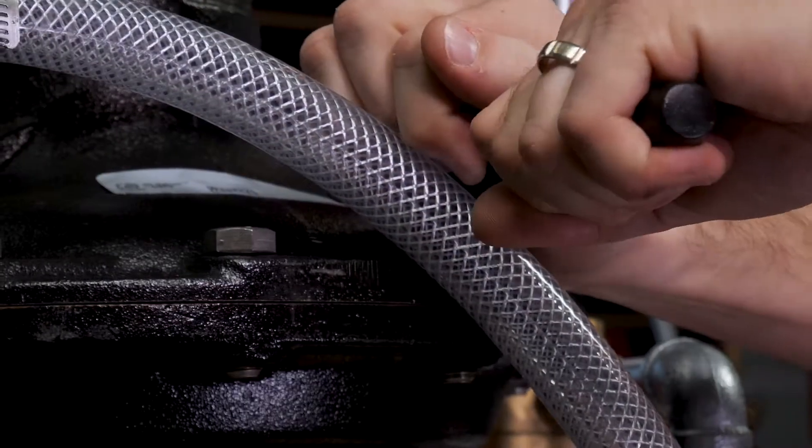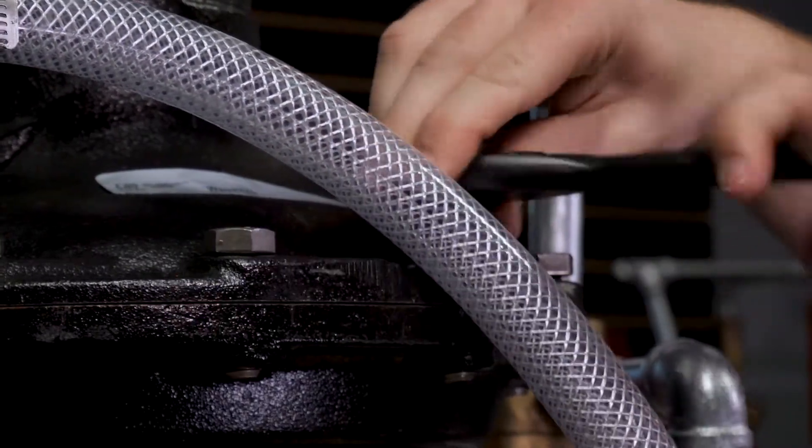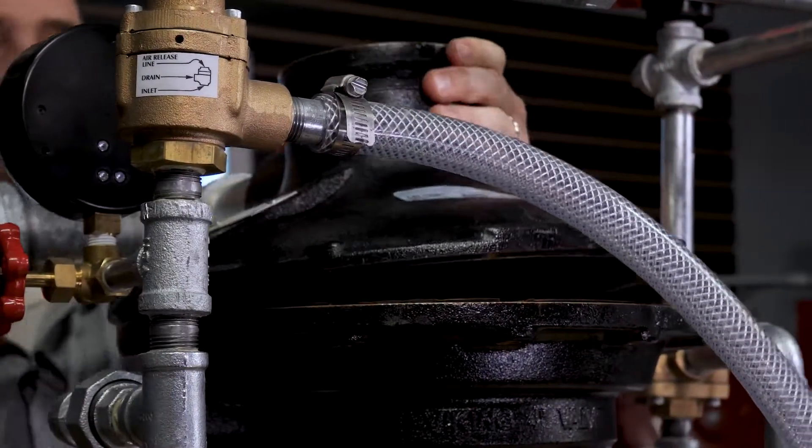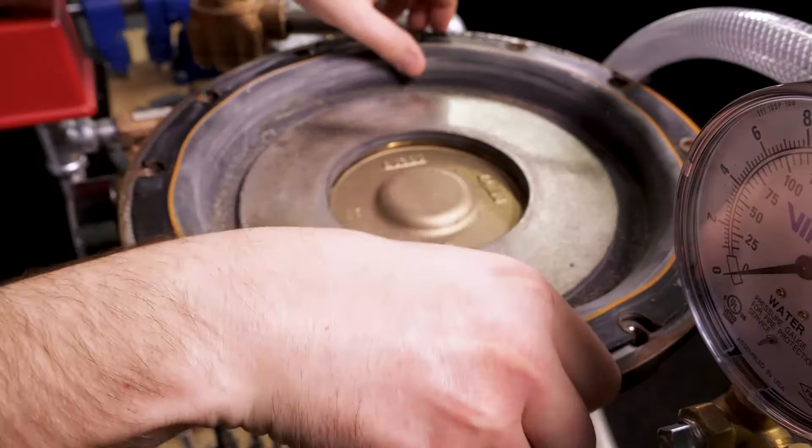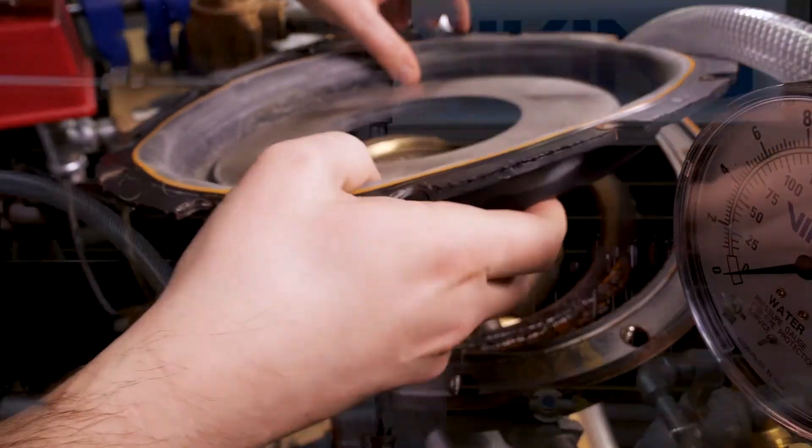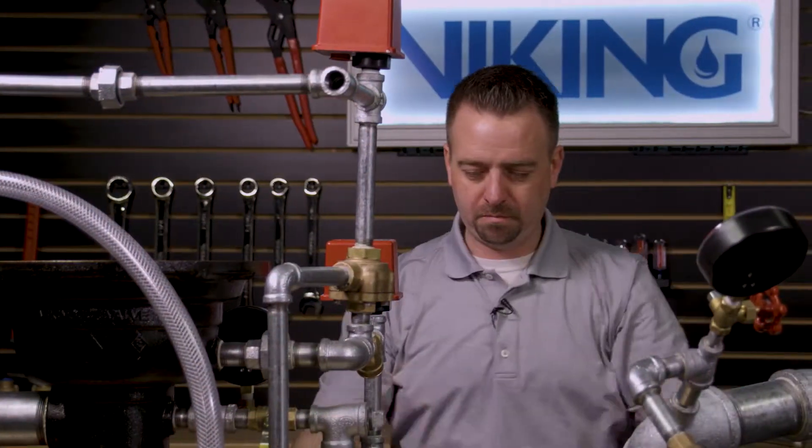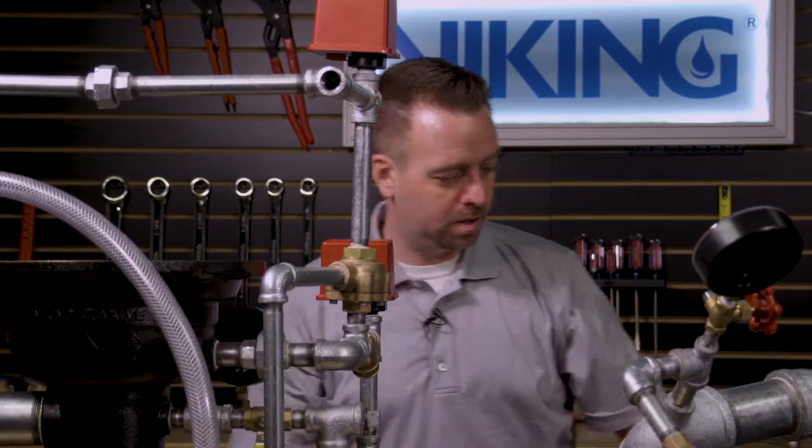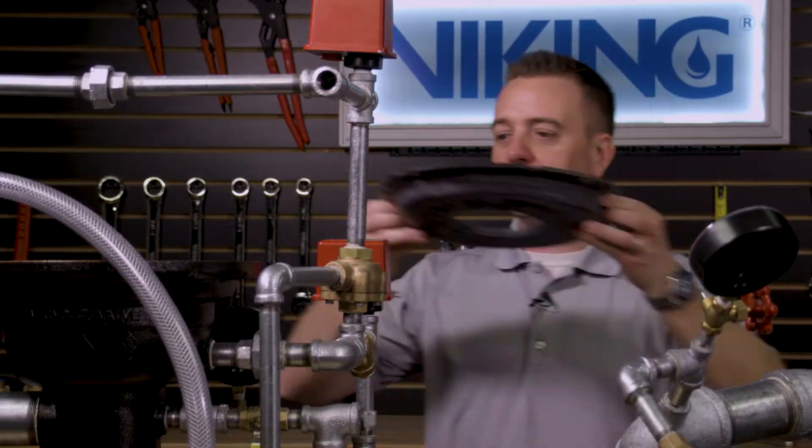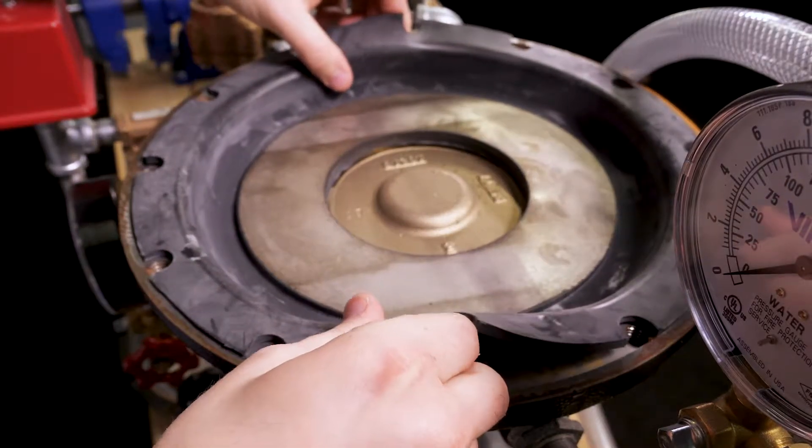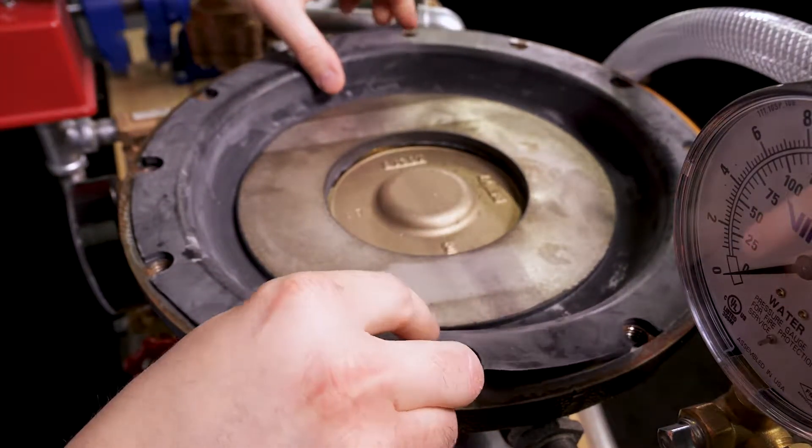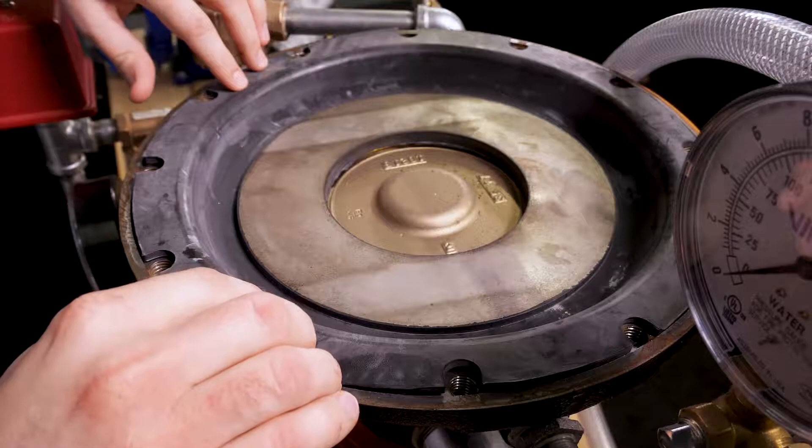We can now remove the cover bolts from the cover of the valve. We can now remove the internal check diaphragm from the valve and replace it with the new internal check diaphragm, lining up the holes in the gasket with the holes in the body of the valve.